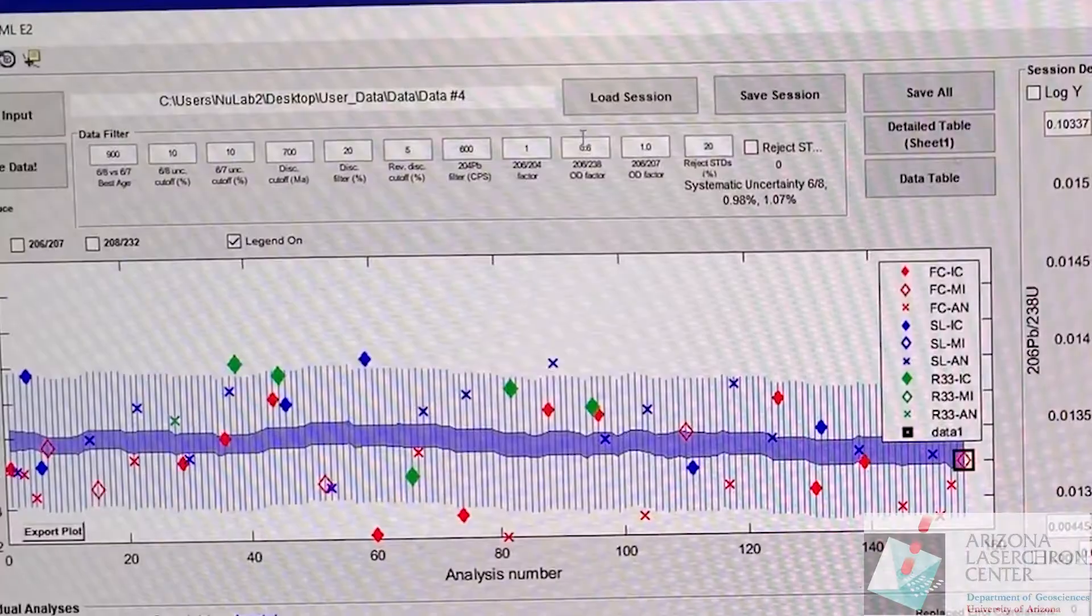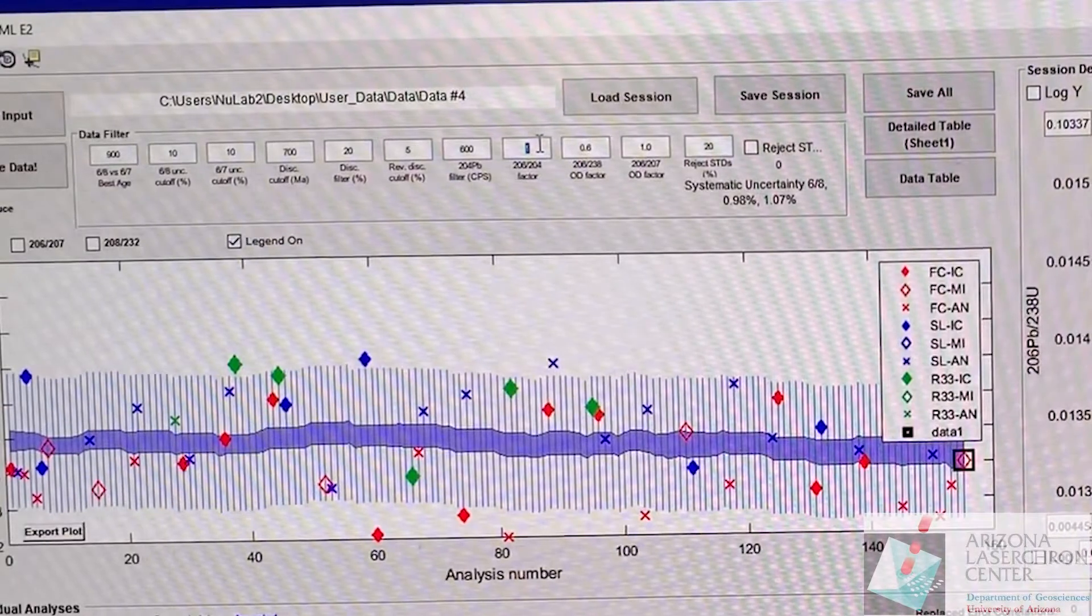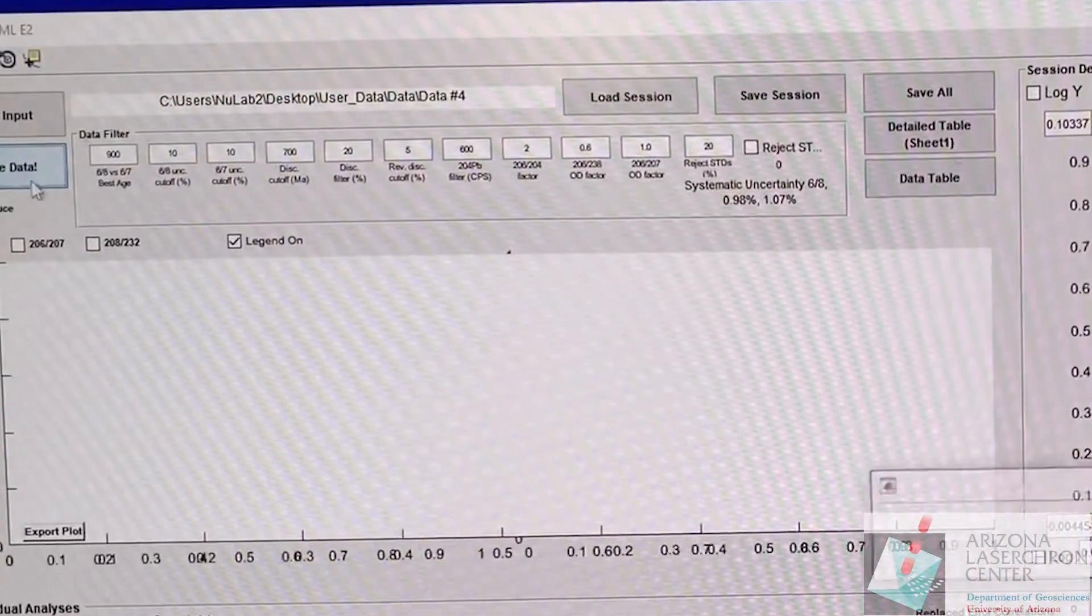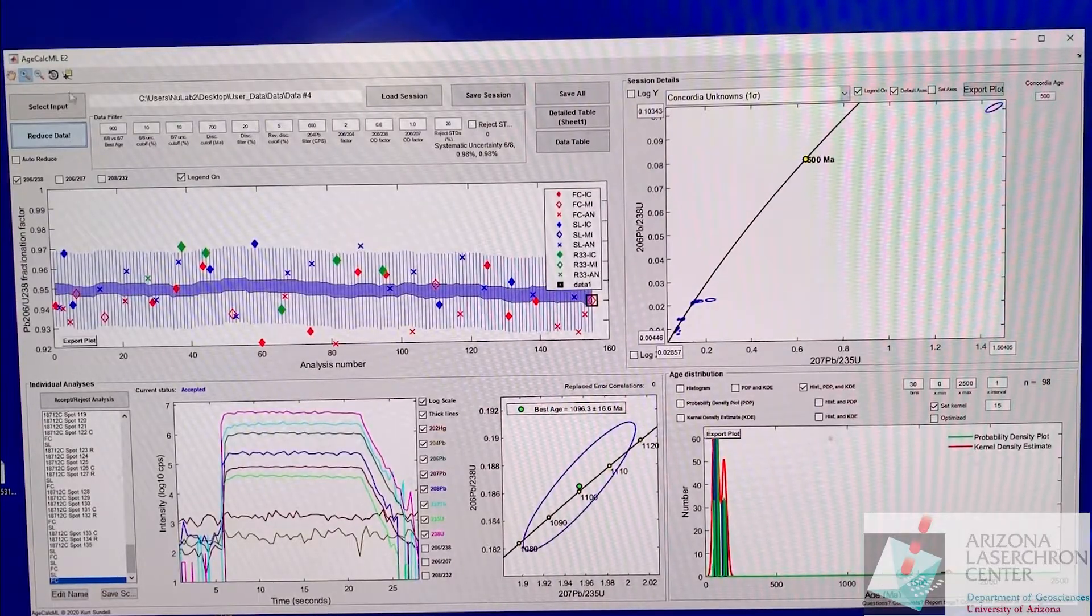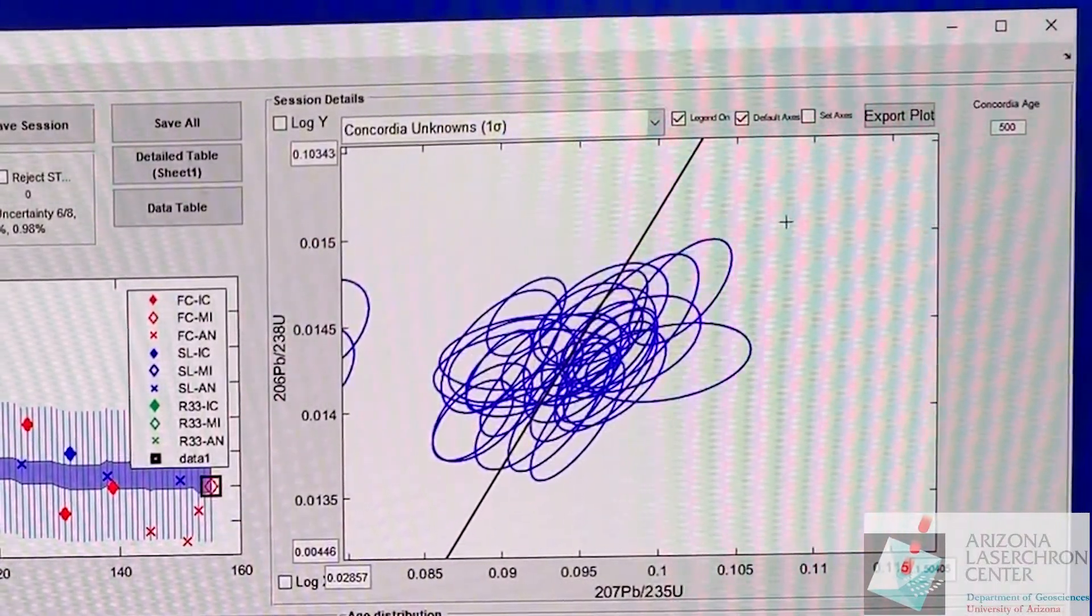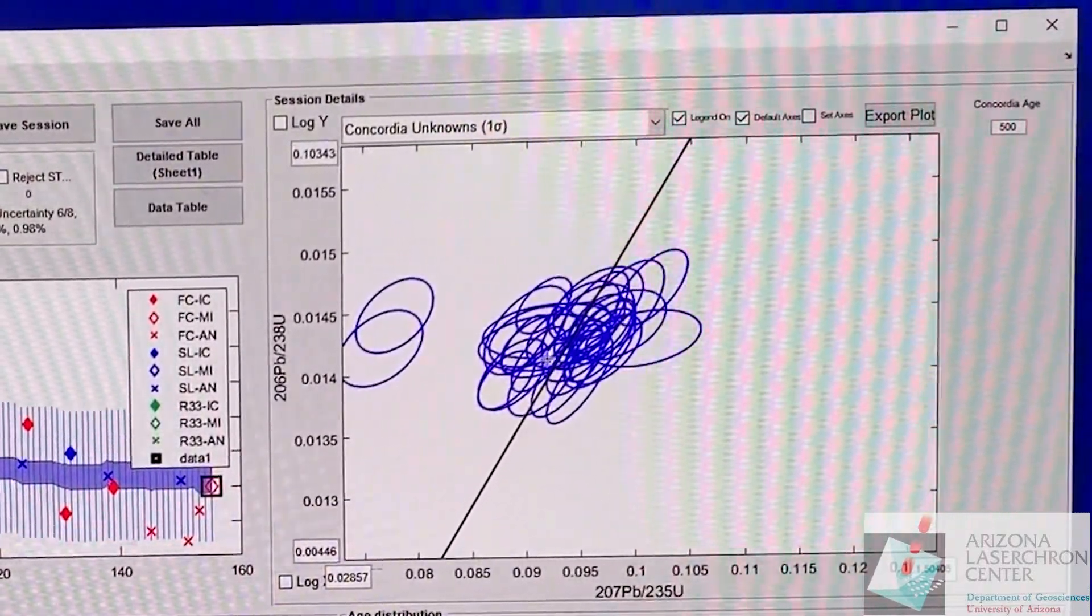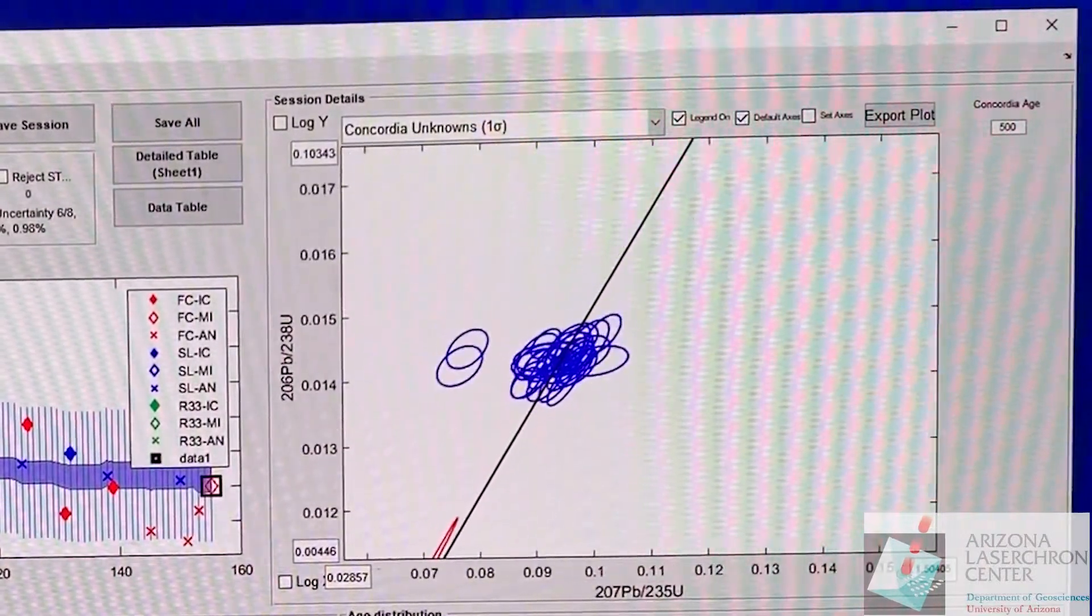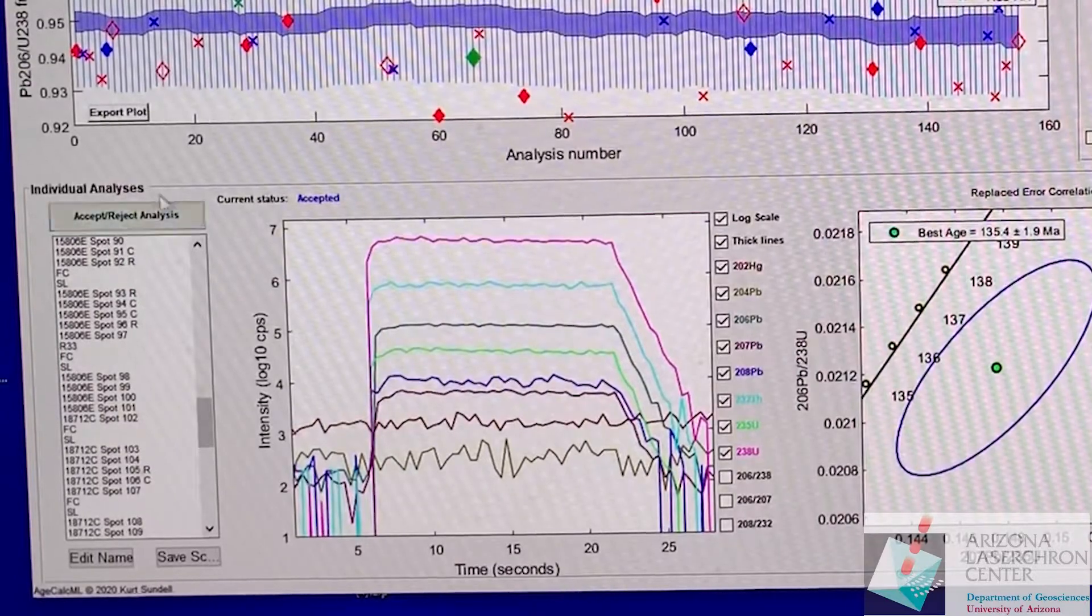Here this population is looking a little bit reverse discordant. So what you can do is change the 6-4 factor just a little bit. If you change it from a 1 to a 2 and click on reduce data that will apply that 6-4 factor to the whole data set. Now you see we're sitting right on Concordia and that's looking great. This is really an issue for the youngest populations in your data set.